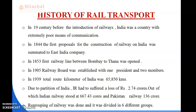In 1832, the first proposal for a railway in India was made in Madras, but it remained only on paper. In 1835 to 1836, a short experimental railway line was constructed at Chintradipedh near Madras, which later became the Red Hill Railway. In 1837, the first operational railway in India — the Red Hill Railroad, Madras — was used for transporting granite stone.